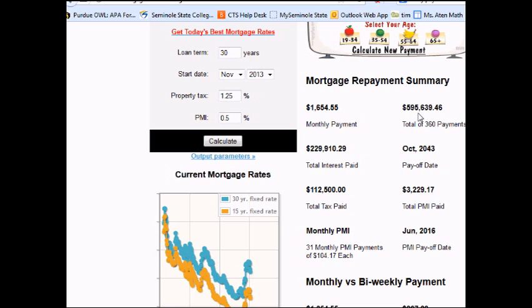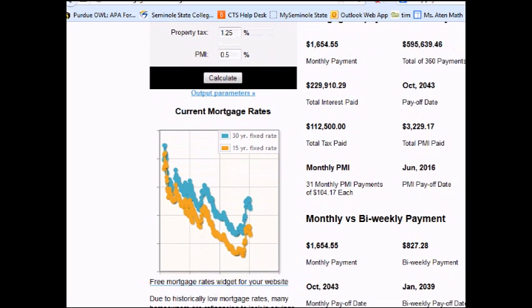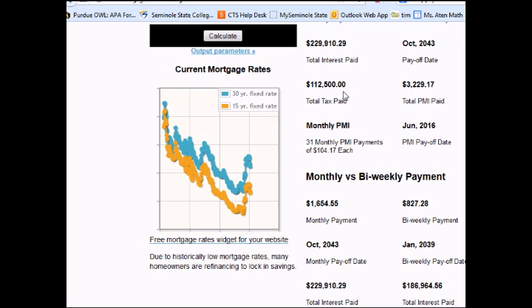Here's the total of the 360 payments: $595,000. It's a $300,000 house.